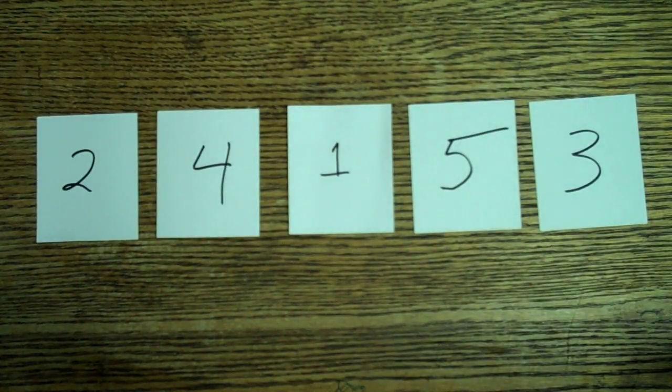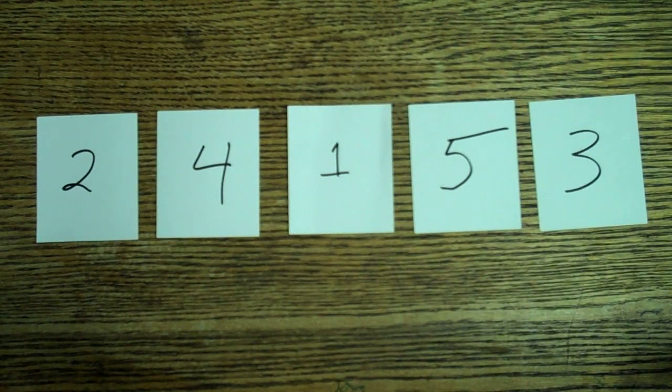We have now seen the best and worst cases for an insertion sort, so let's move on to the average case, an array that is not sorted at all. This is the case that will occur most often, and the running time is in between that of the best case and the worst case. When working with an average case, the insertion sort works just as it does with the best and worst cases, by comparing two values at a time and placing them back down with the lesser value to the left of the greater value.